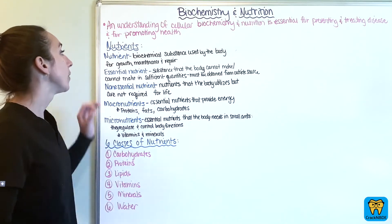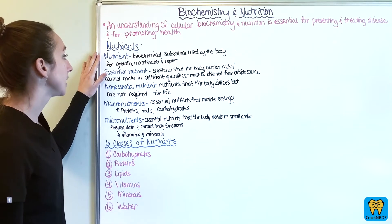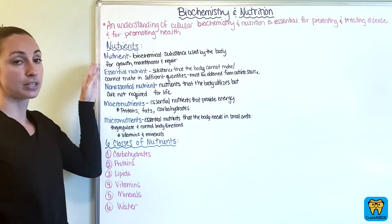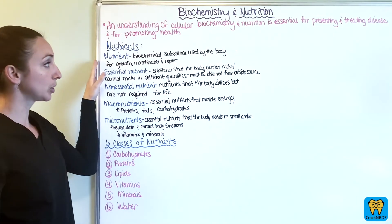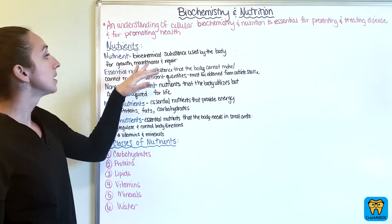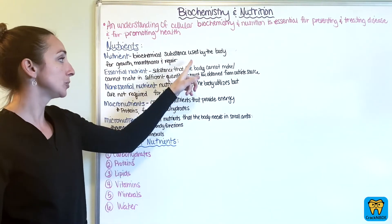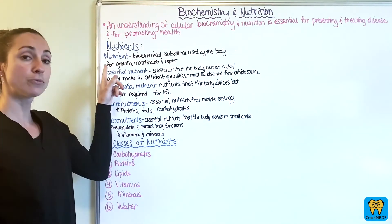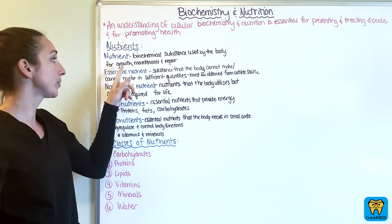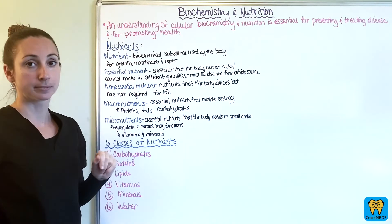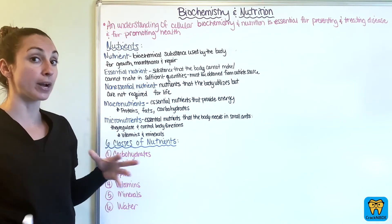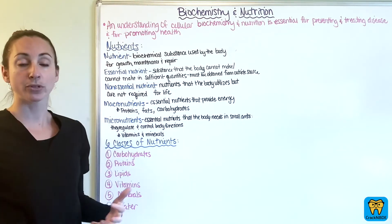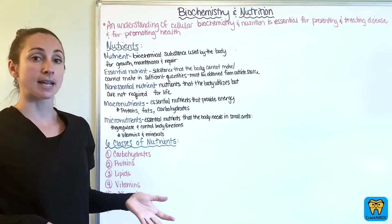Now our nutrients — the definition of a nutrient is a biochemical substance used by the body for growth, maintenance, and repair. Your body needs nutrients for growth, maintenance, and repair.